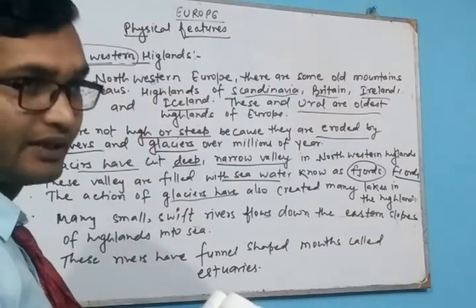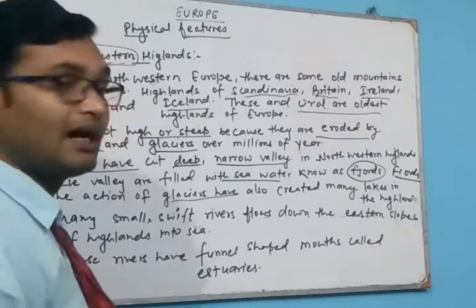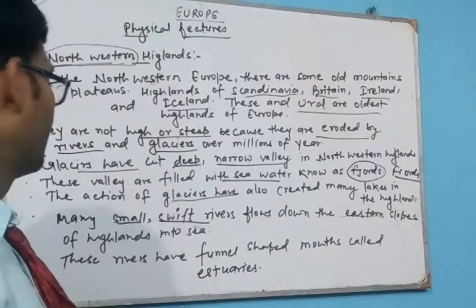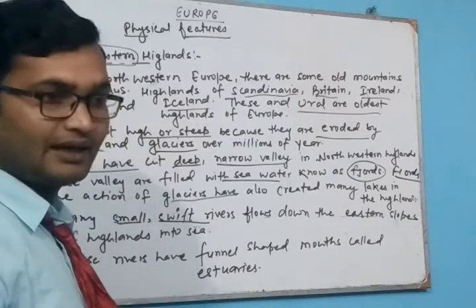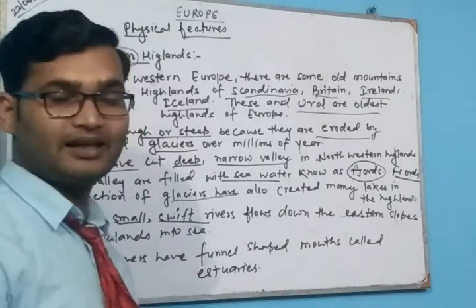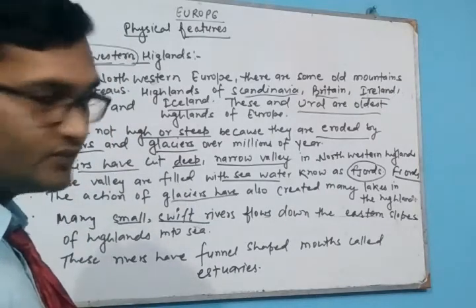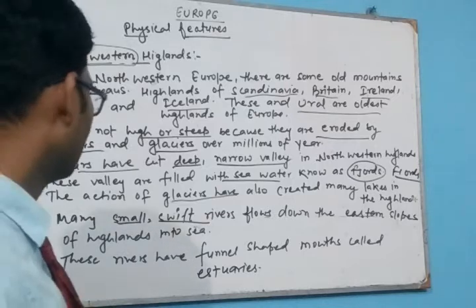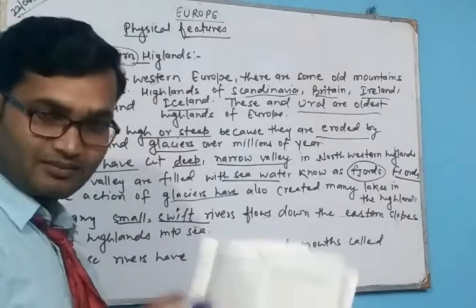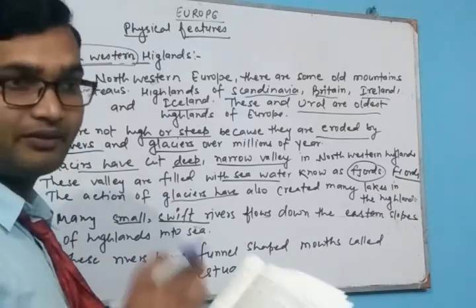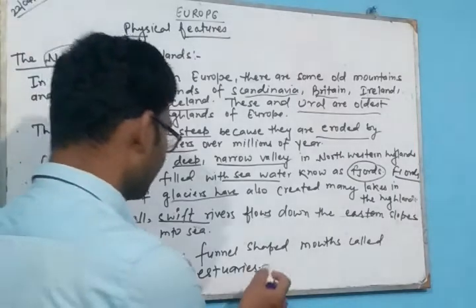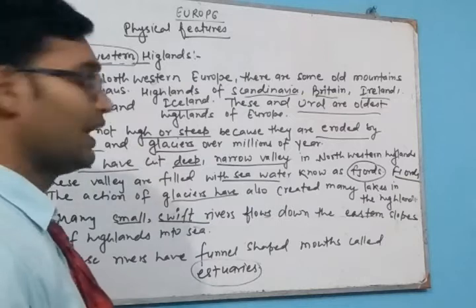The actions of glaciers have also created many lakes in this highland. There are many small, swift rivers that flow down the steep slopes of the highlands into the sea. These rivers originate from the eastern slopes of the highlands. These rivers are funnel-shaped — one part is broader and the other narrow — and such funnel-like river mouths are called estuaries, spelled E-S-T-U-A-R-I-E-S.